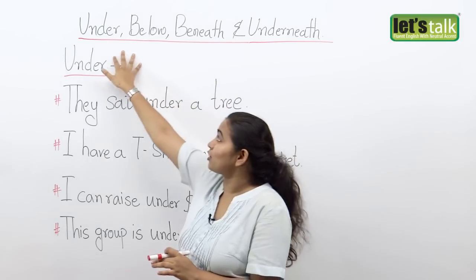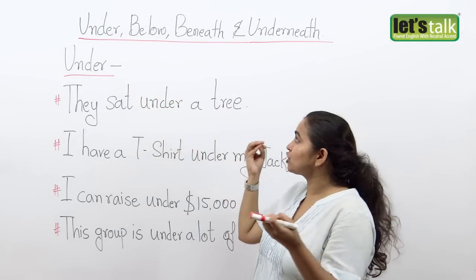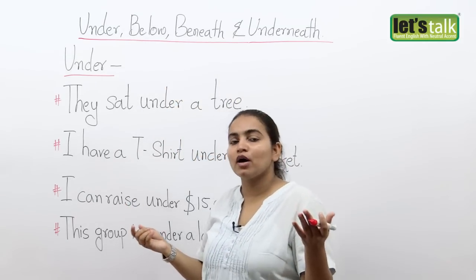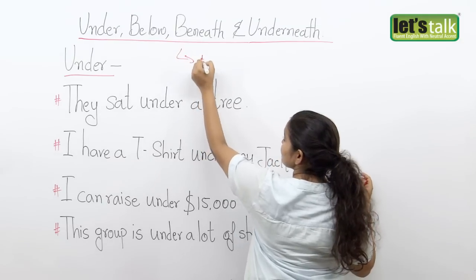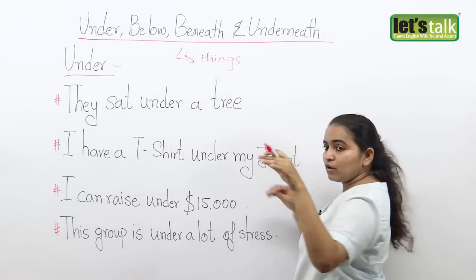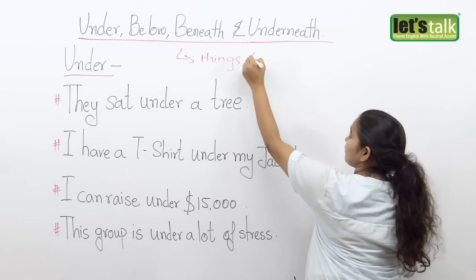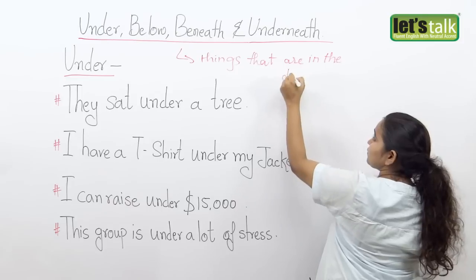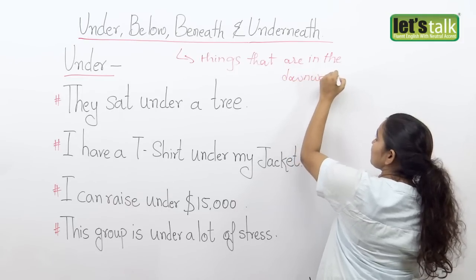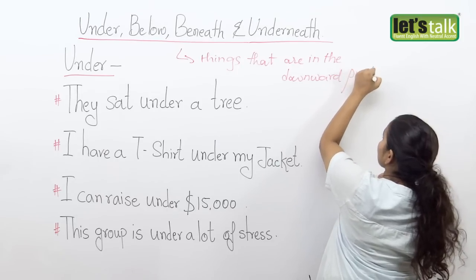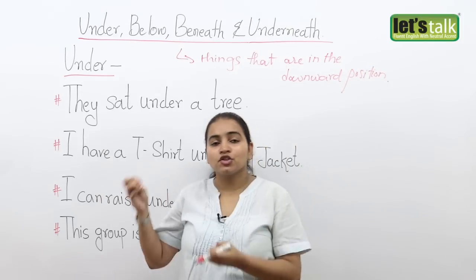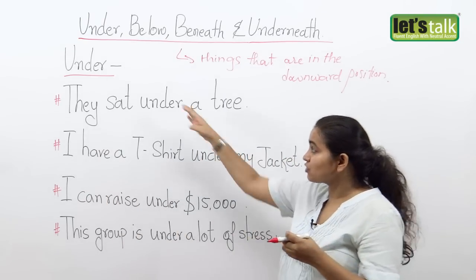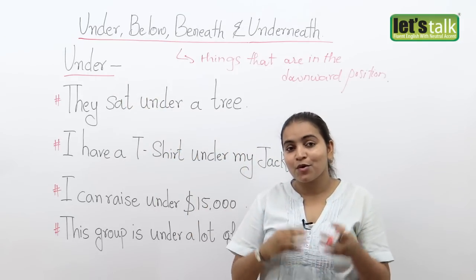Now what do all these words mean? When I refer to words like under, below, beneath, and underneath, I am talking about things that are in a downward position. So of course when I talk about under and below, I am talking about anything that is down there. But let's see where we can use these words and in how many contexts.